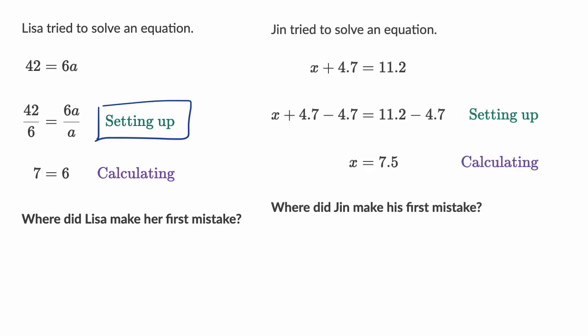Let's give another example here. Here it says that Jin tried to solve an equation. X plus 4.7 is equal to 11.2. Where did Jin make his first mistake? Pause this video and try to figure it out.